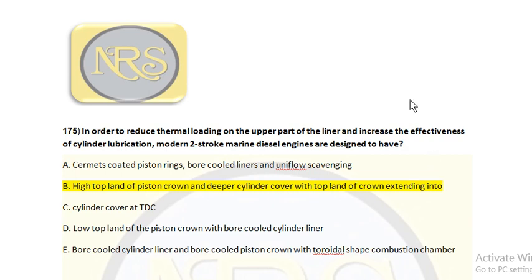The high top-land piston crown and the deeper cylinder cover are the structural differences designed to reduce thermal loading on the top of the liner. This will create swirling action, proper combustion, and transfer of exhaust gas, while also ensuring effective lubrication operation. For question number 175, option B is the correct answer.